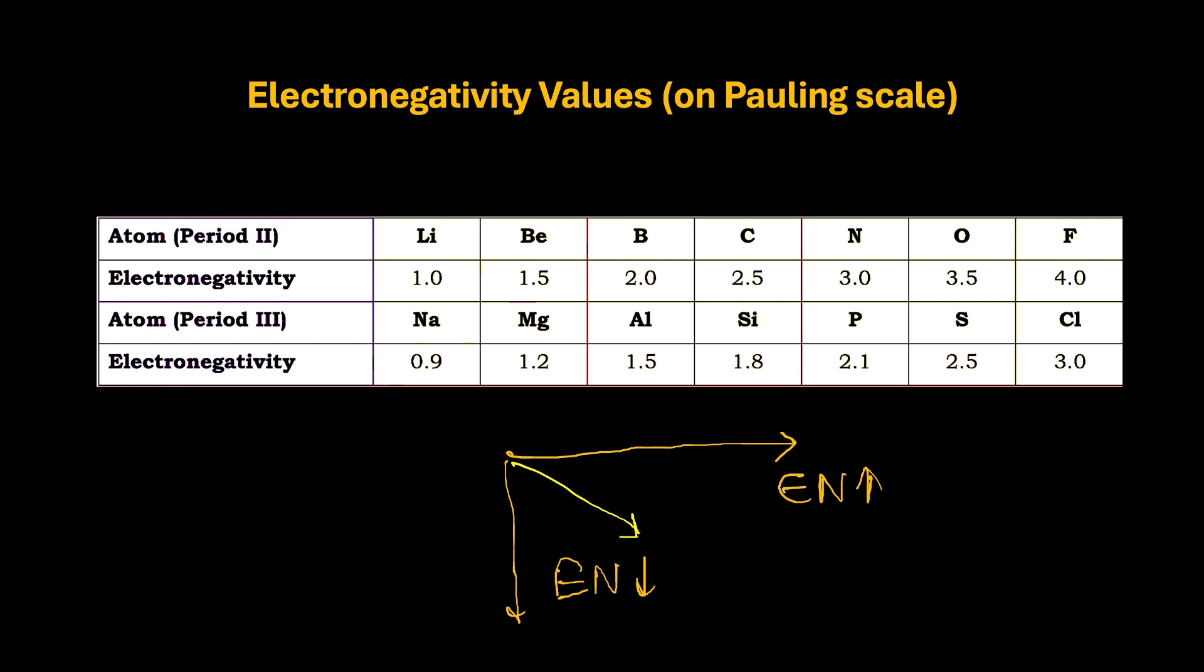And that can be clearly observed. Lithium and magnesium have very comparable electronegativity. Beryllium and aluminium also have a very comparable electronegativity. Boron and silicon also have a very similar electronegativity.